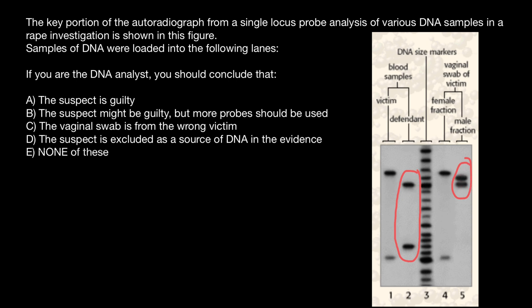One band is the same, but the other band is different. So these two bands cannot come from the same person — this is two different genotypes of two different people. So the correct answer is going to be answer D: the suspect is excluded as a source of DNA in the evidence.